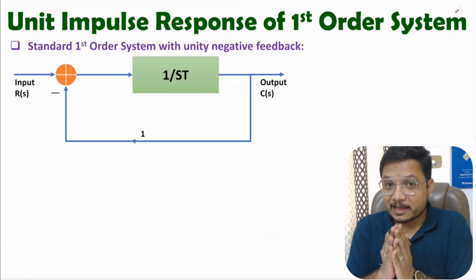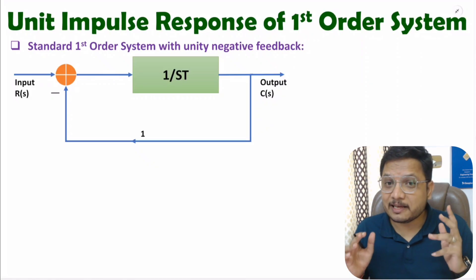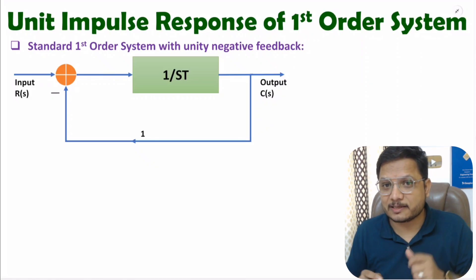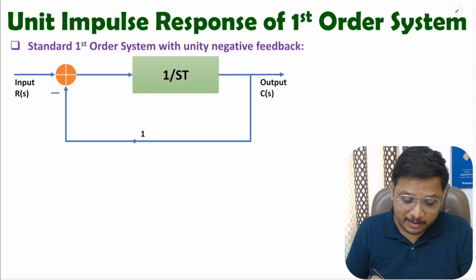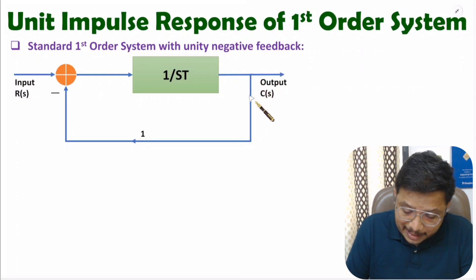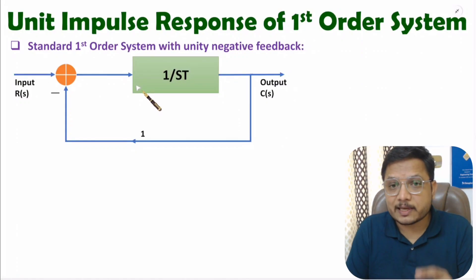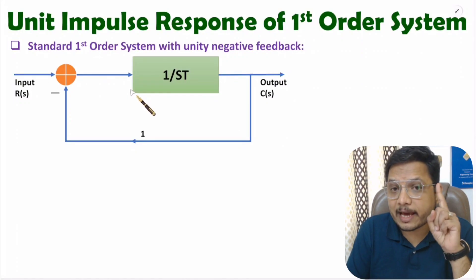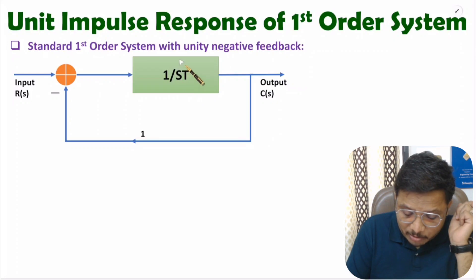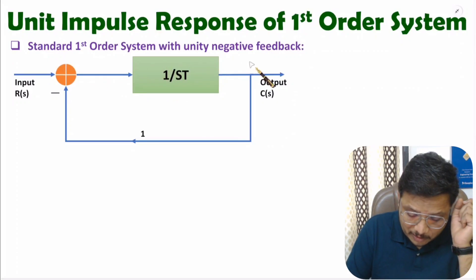Hello friends, welcome to Engineering Panta family. In this video I will explain the unit impulse response of a first order system. We have a standard first order system with unity negative feedback. In a first order system we have one pole, so in the denominator we have an 's' term — this is the standard first order system.